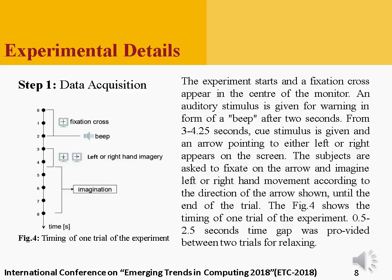For data acquisition, the experiment starts with a fixation cross that appears in the center of the screen. After two seconds, a beep sound is given as an auditory stimulus as a warning. Then for three to four point two five seconds, a cue stimulus is given and an arrow pointing either left or right appears on the screen, indicating in which direction the subject has to imagine movement. Then for four point two five seconds to eight seconds, the subjects are asked to fixate on the arrow and imagine the corresponding hand movement. With this, one trial ends at eight seconds. Then from 0.5 to 2.5 seconds, a time gap is provided between two trials for relaxing the subject.